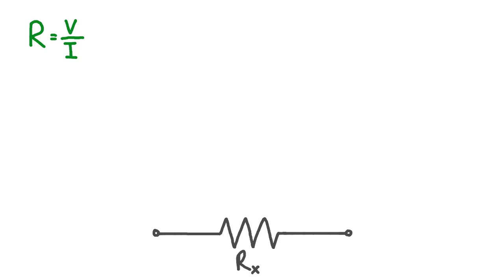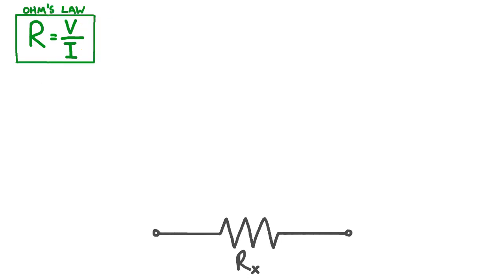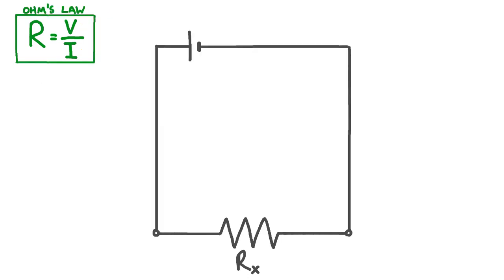Ohm's law tells us that the resistance of a component is given by the voltage across that component divided by the current in that component. So as a general idea, if we could apply some known voltage V to a resistor and then measure the current I, then we could calculate its resistance by dividing the voltage by the current. With this in mind, let's connect a cell to our resistor. Now that we're applying a potential difference V, we'll find there's a current I in the circuit. If our voltage is known, then all we need to do is measure the current I, and we can calculate the resistance using Ohm's law.